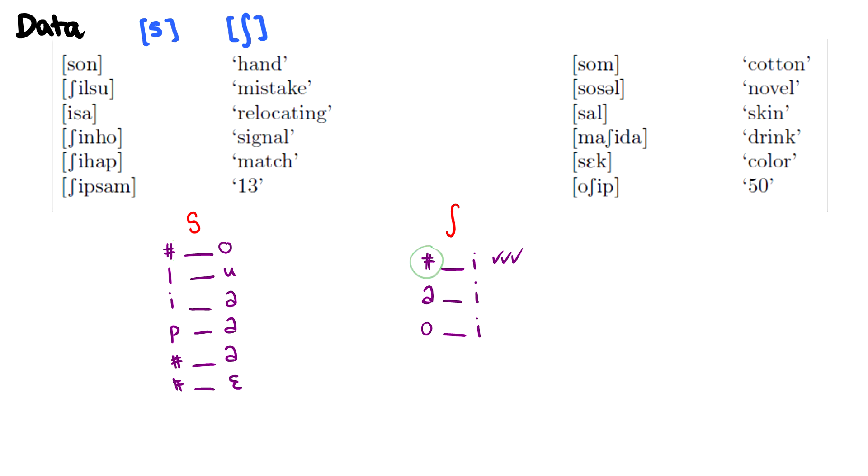In fact, it can't be between word initial and vowel, because again, we have a word initial followed by a vowel in both circumstances. So we need a tighter environment.